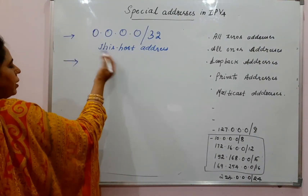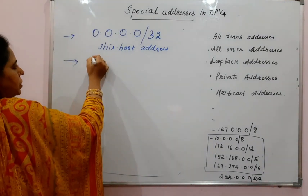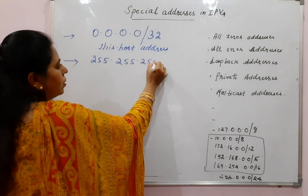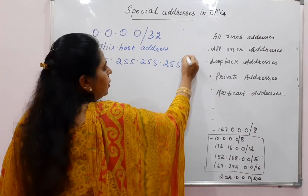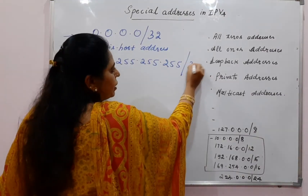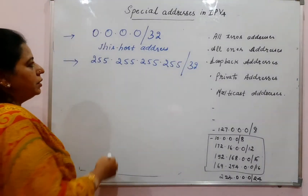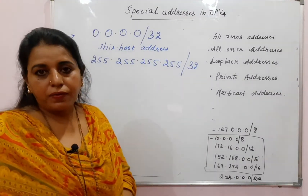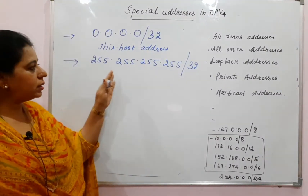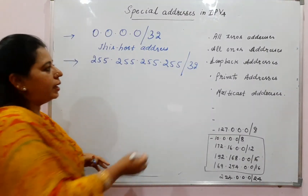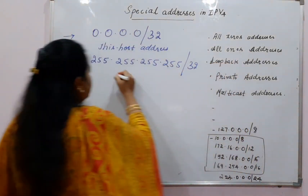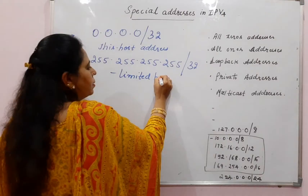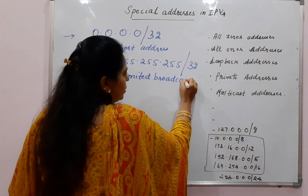The all-ones address, when converted to decimal notation, becomes 255.255.255.255/32. Here also we have /32, so 2 to the power of (32 minus 32) equals 1 — this is one single address. This address is called the limited broadcast address.